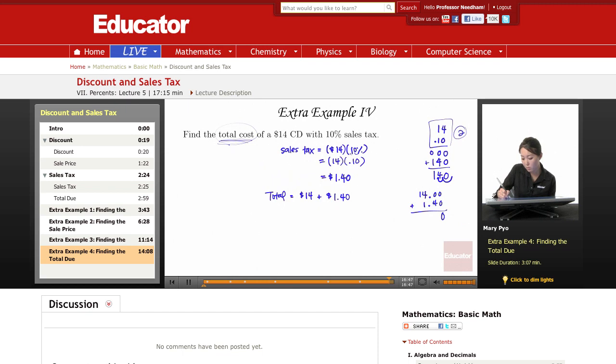So this is 0, this is 4, bring down the decimal point, 4 plus 1 is 5, 1, bring it down.